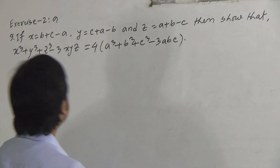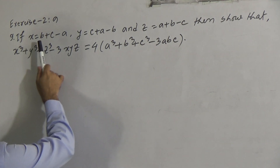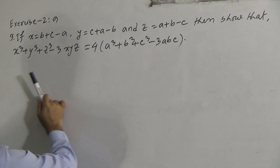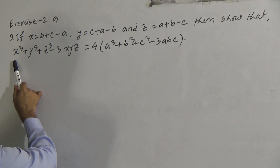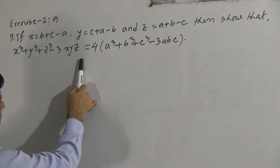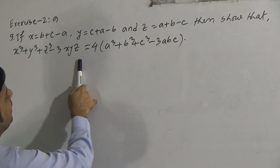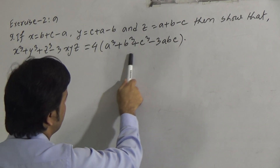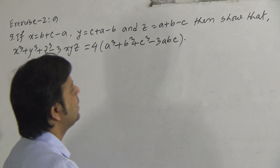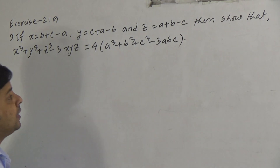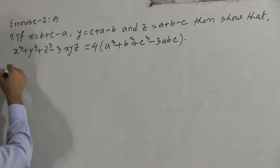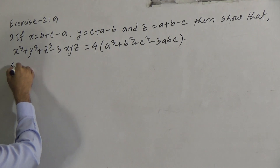Dear students, so the values of x, y, and z are given, and we need to show that x³ + y³ + z³ − 3xyz = 4(a³ + b³ + c³ − 3abc). To solve the question, at first we can write the given information.